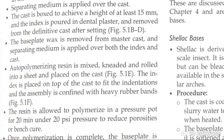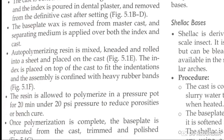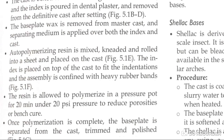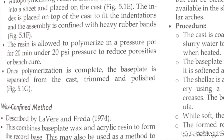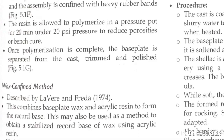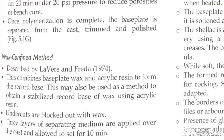Separating media is applied on both the index and cast. Autopolymerizing resin is mixed, kneaded, rolled and placed in sheets. It is fitted into the form, the index is placed on top of the cast fitted in indentations, and the assembly is confined with heavy rubber bands. The resin is polymerized for 20 minutes at 20 psi pressure to reduce porosities. Once polymerization is completed, the base plate is separated from the cast, trimmed and polished.